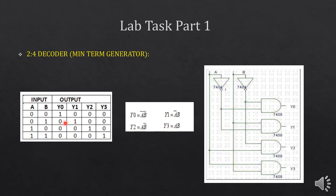When the input is 0-1, the second output will be high. Similarly on 1-0, the third output will be high. And on 1-1, Y3 will be high, which is the most significant output. You can derive these equations using this table. For Y0, we can write A-bar B-bar as A is 0 and B is 0. For Y1, A is 0 and B is 1, so we can write it as A-bar B. Similarly, you can derive the remaining two equations.